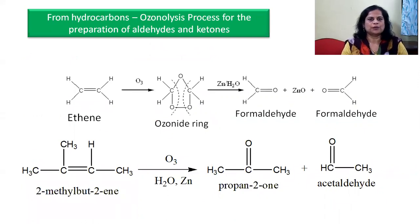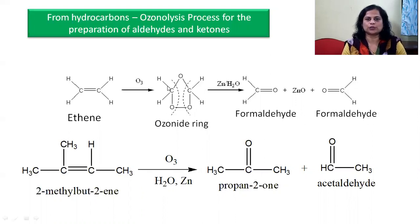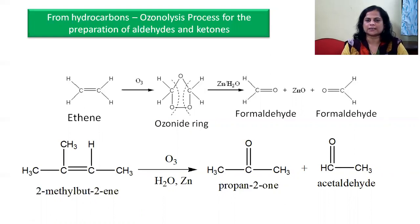Next we prepare aldehydes and ketones from hydrocarbons. First we use alkenes in the ozonolysis reaction. Ozonolysis of alkenes: ethene when reacts with ozone, one oxygen gets added between the two carbon atoms forming the ozonide ring, and the remaining two oxygens form the ozonide ring. With Zn and H2O the ring ruptures and two molecules of formaldehyde are formed with removal of zinc oxide.